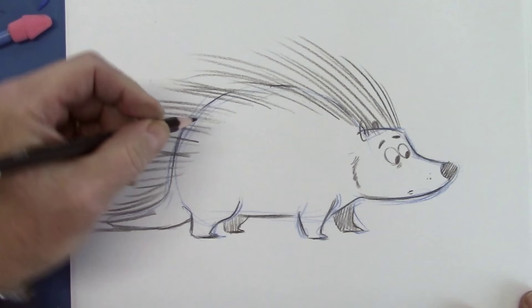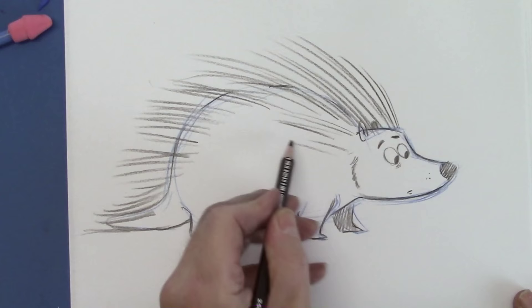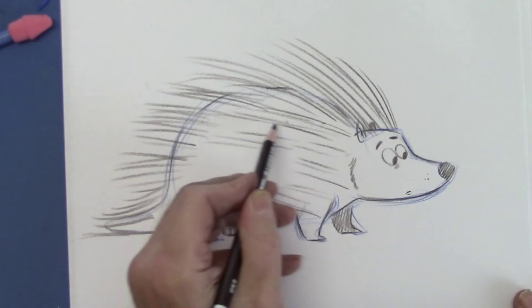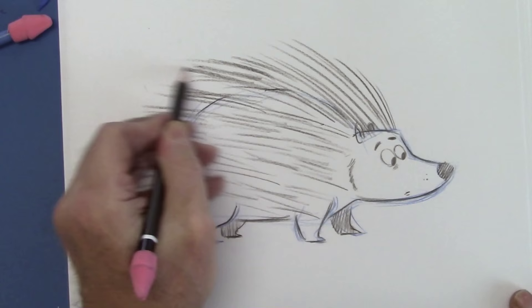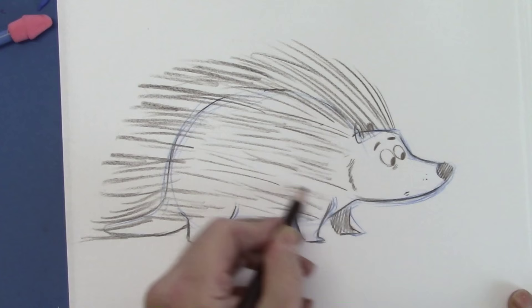And then what do you do for the inside? Same thing. Not quite as long, and you repeat them. It's really a bunch of these. I'm going to show you a fun trick later using cartoons with porcupines. A few more and darken them here at the ends.